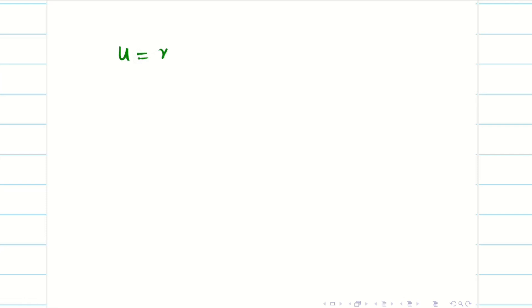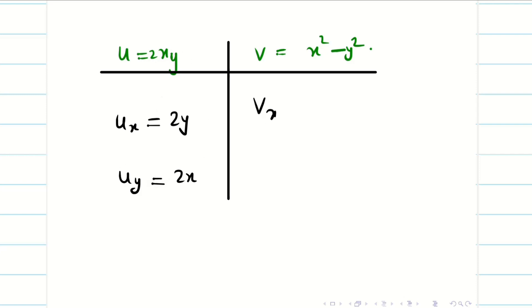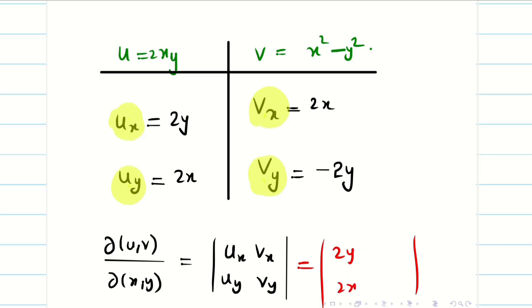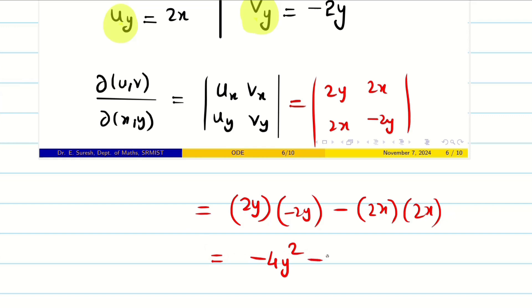First table: from u = 2xy and v = x² − y², we get ux = 2y, uy = 2x, vx = 2x, vy = −2y. So ∂(u,v)/∂(x,y) = determinant [2y, 2x; 2x, −2y]. Expanding: (2y)(−2y) − (2x)(2x) = −4y² − 4x² = −4(x² + y²).